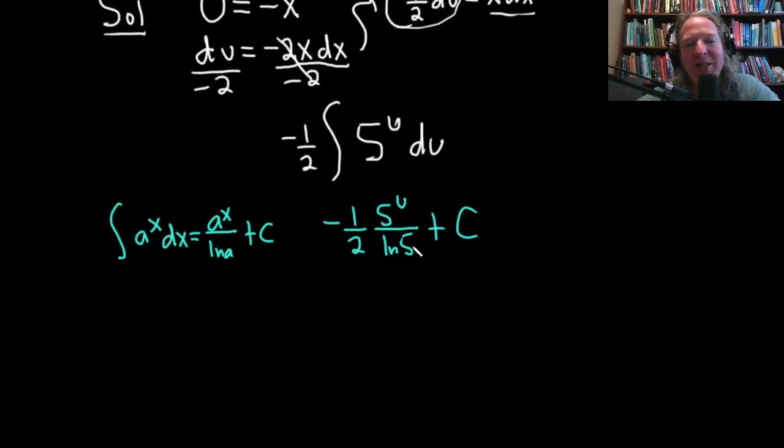We have to remember that our original variable of integration was x. So we're going to go back to x now. So this is going to be negative 1 half, 5, and u was negative x squared. So this will be negative x squared over the natural log of 5, plus C, which is our constant of integration. So yeah, nice example, I think.